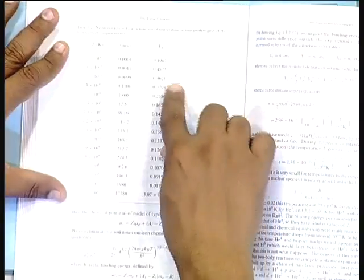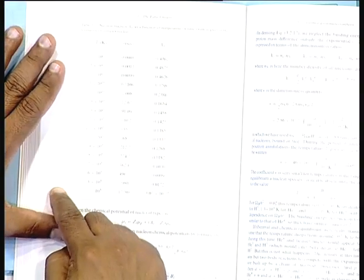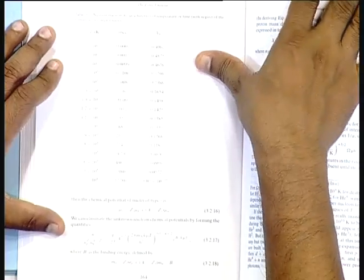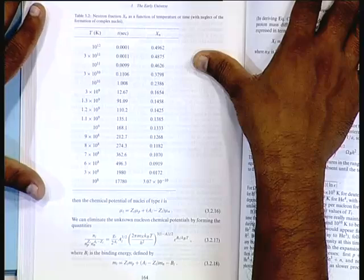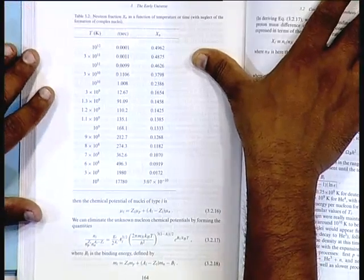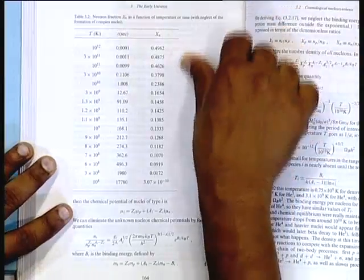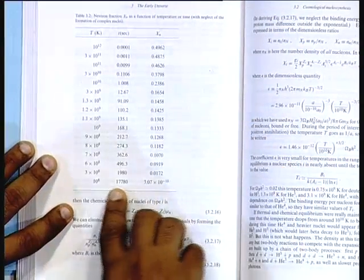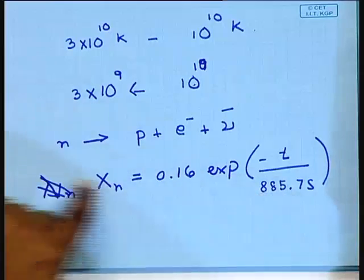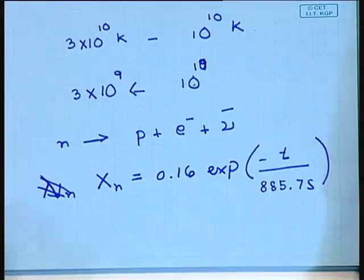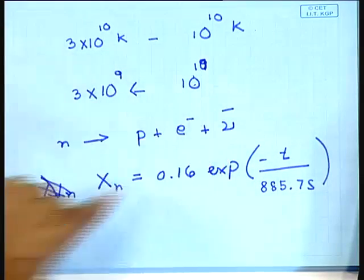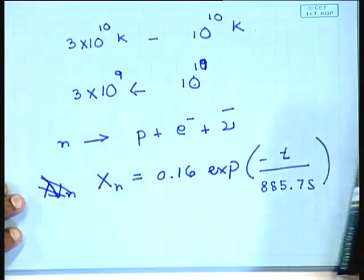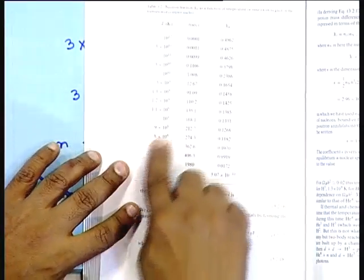Taking the data obtained by integrating the differential equation shown in the last class — which has results tabulated for the reaction rates — once you put them into the differential equation and integrate, you get these results. These results are very well fitted by this exponential formula, giving a very good fit to the numbers in this range.